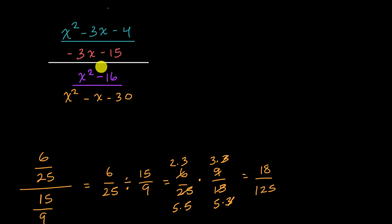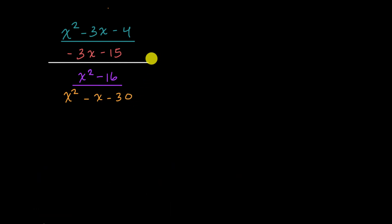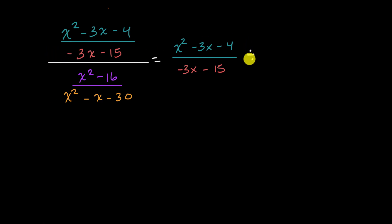So we're going to do the exact same thing up here, but there's one extra complication. We have to keep track of the x values that would make this expression undefined in any way, because as we reduce to lowest terms we might lose that information, and if we lose that information we have changed the expression. So we have to keep track of how we are constraining this domain. I can rewrite this as x squared minus 3x minus 4 over negative 3x minus 15, divided by x squared minus 16 over x squared minus x minus 30.